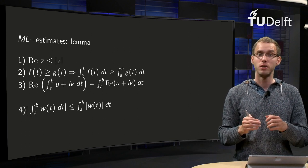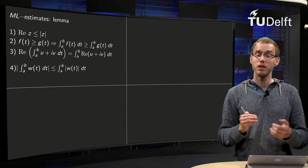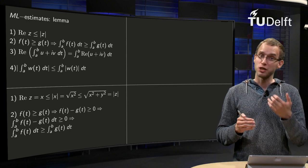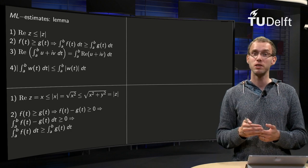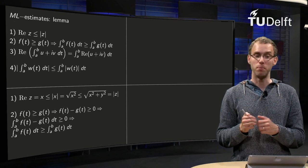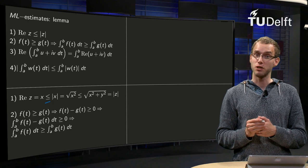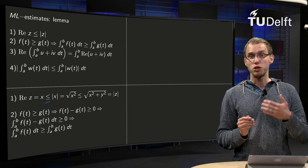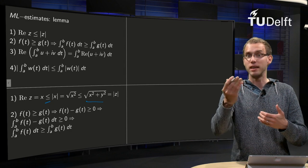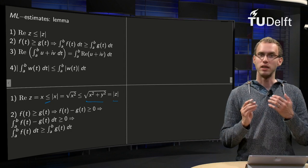Let's take a look at the first two. The real part of z is smaller or equal than the modulus of z. If we write z equals x plus iy, the real part of z equals x. And x is smaller or equal than its modulus, because if x is positive it equals its modulus, and if x is negative it is smaller or equal than any modulus, because a modulus is a positive number. The modulus of x is the square root of x squared, and that's smaller or equal than the square root of x squared plus y squared, because the square root of x squared plus y squared is just the modulus of z.